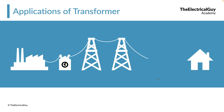Now we have reached near the end customer, and the question is: can we give this 420 kV directly to the end customer? The answer is no — there is no device in a typical house that can support 420 kV. So we need to step down this voltage again. We add a device that steps down the 420 kV to a usable voltage level, which can then be supplied to houses, factories, and commercial buildings.